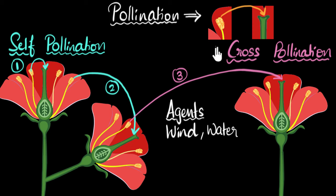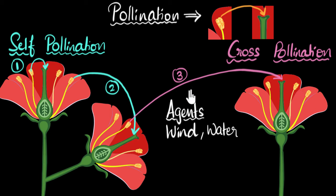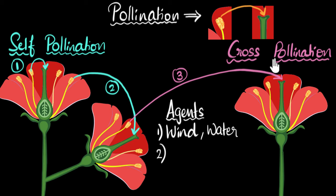For cross-pollination to happen, pollen grains need to be transferred from one plant to another. If these trees are very far apart, the chances of cross-pollination reduce. This is where insects come into the picture — another important agent for pollination, especially cross-pollination. These include insects like bees, butterflies, moths, and even birds.